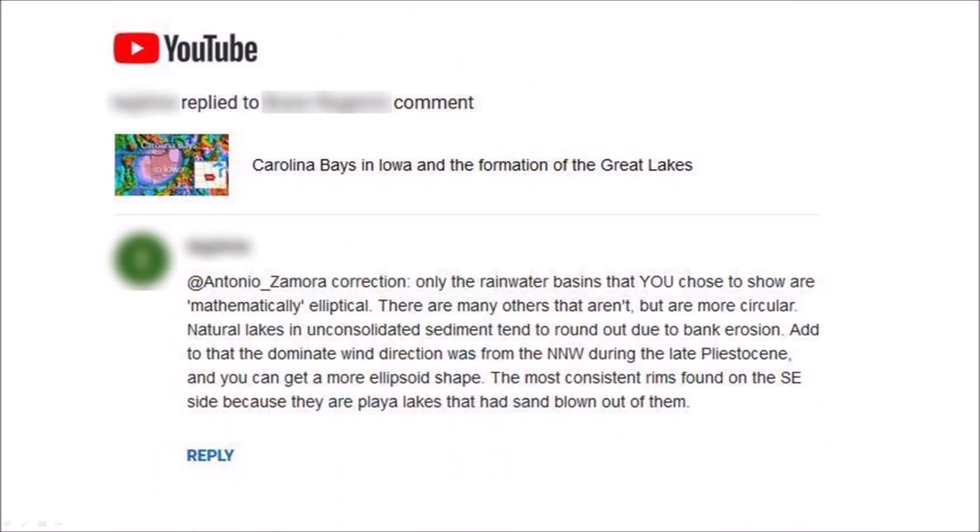Sometimes I am criticized for my emphasis on the elliptical geometry. One person said: only the rainwater basins that you chose to show are mathematically elliptical — there are many others that aren't, but are more circular. Natural lakes in unconsolidated sediment tend to round out due to bank erosion. Add to that the dominant wind direction was from the north-northwest during the late Pleistocene and you can get a more ellipsoid shape.